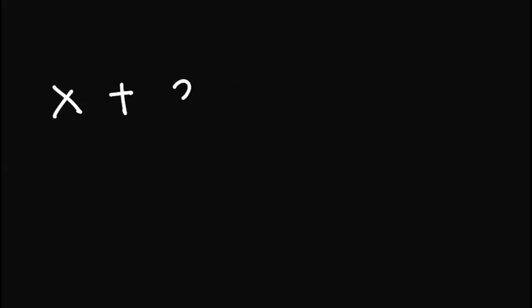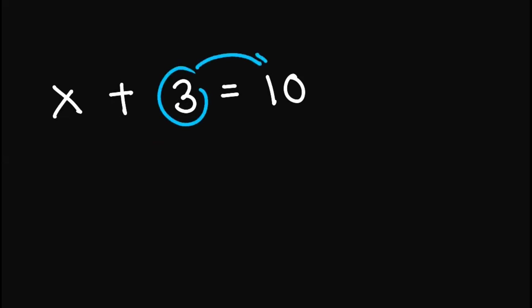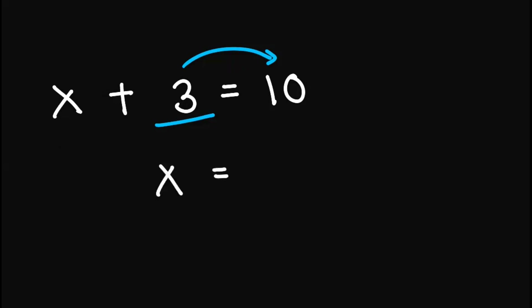Now let's try x plus 3 equals 10. Another method we can use is, aside from subtracting out here, another way is by moving this out here. So when we move this, what you need to keep in mind is that whenever a number crosses this equation, we change its sign. So in this case, if we move 3 to the other side, this will become x equals 10 minus 3, since we change its sign. And so the answer here is x equals 7.